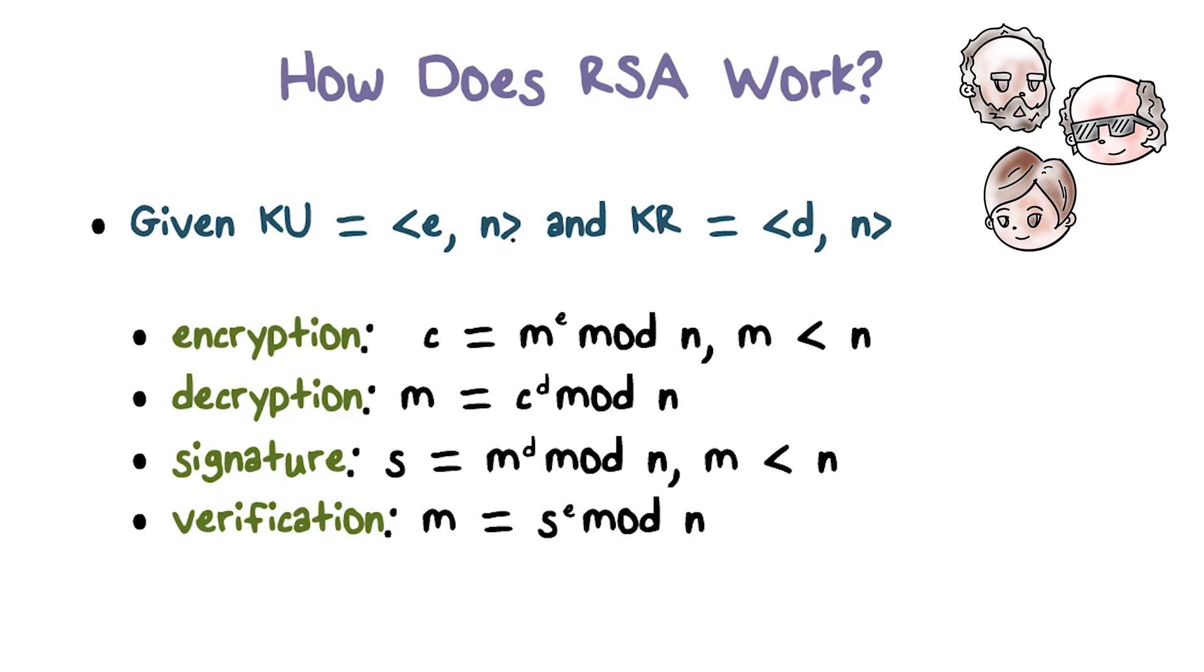Again, every user can publish his or her own public key and keep his or her own private key securely to himself or herself. To encrypt a message to a user, say Alice, Bob will obtain Alice's public key and compute the ciphertext by raising the plaintext to the power of e mod n. To decrypt, Alice will use her own private key to raise the ciphertext to the power of d and then mod n.